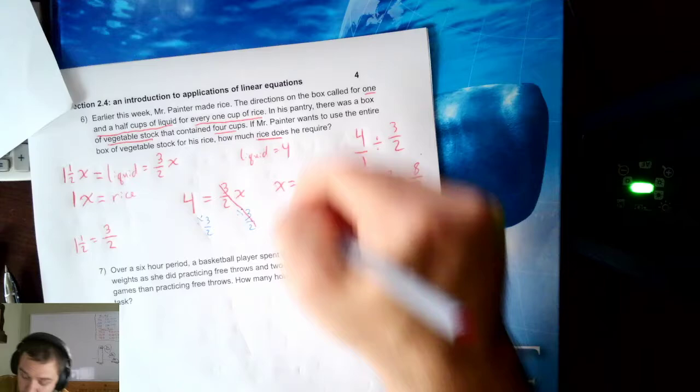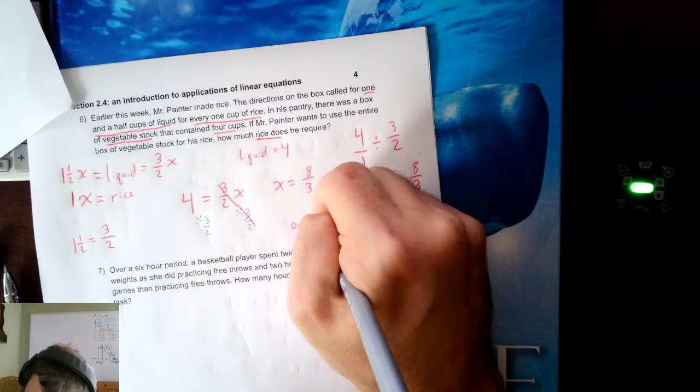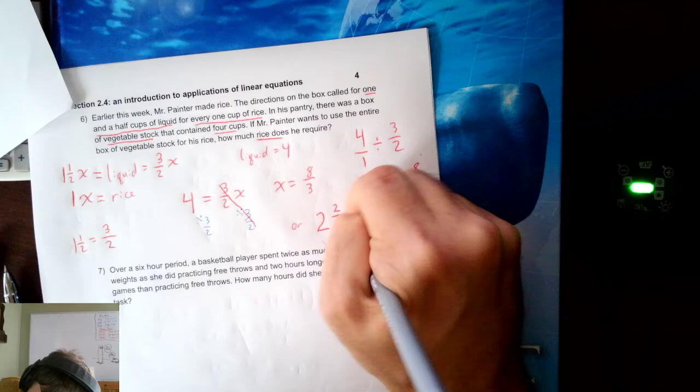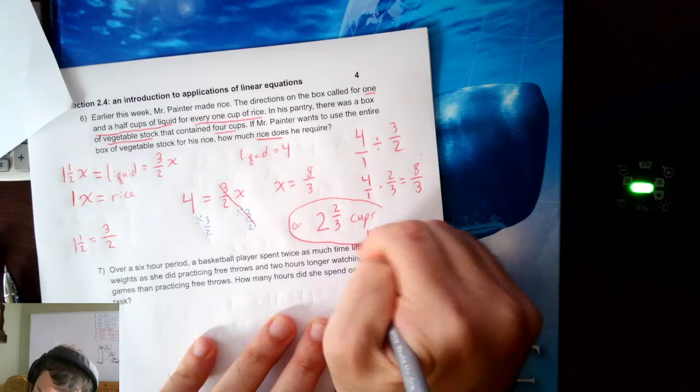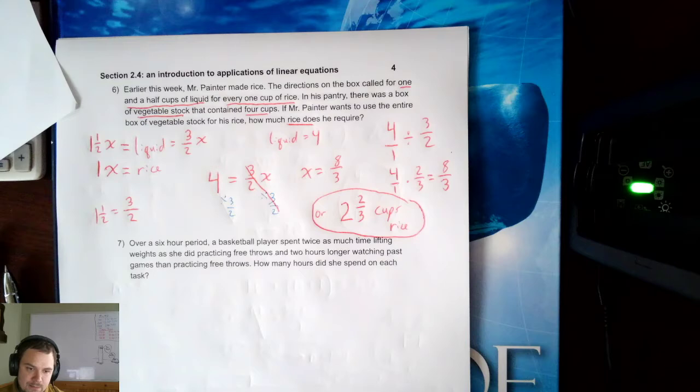So X equals 8 over 3, or 3 goes into 8 twice with 2 left over, 2 and 2 thirds cups rice. So if I'm in the kitchen, I need to add 2 and 2 thirds cups of rice to my vegetable stock to make my rice.